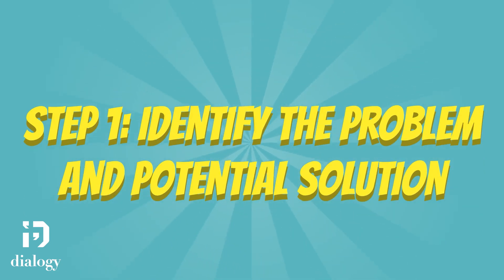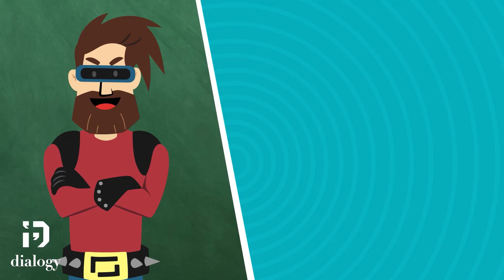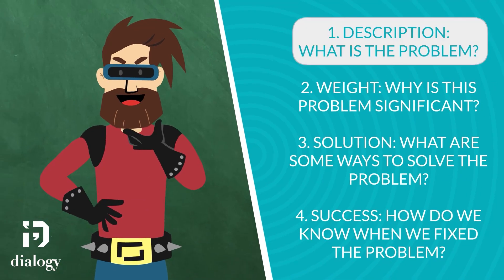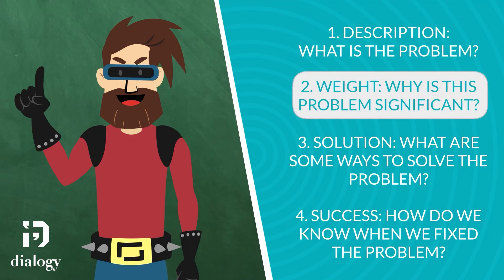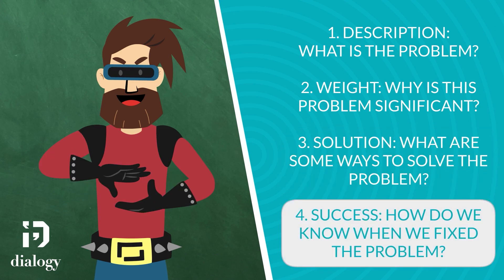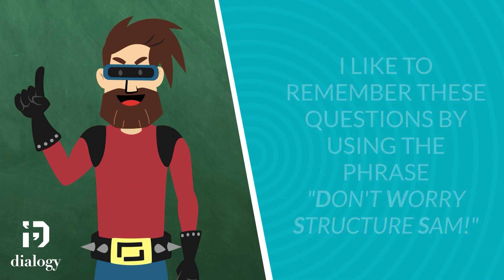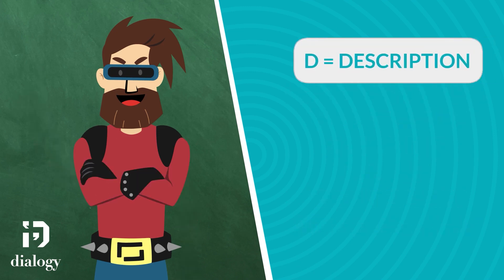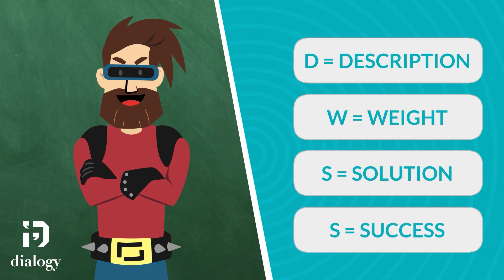Step one: identify the problem and potential solution. During prep time, we need to work with our partner to answer the following questions. Number one, description — what's the problem? Number two, weight — why is this problem significant? Number three, solution — what are some ways to solve the problem? And number four, success — how do we know when we've fixed the problem? I like to remember these questions using the phrase 'Don't Worry, Structure Sam.' The D stands for description, the W for weight, the S for solution, and the second S for success. Following step one will improve the structure of our speech.